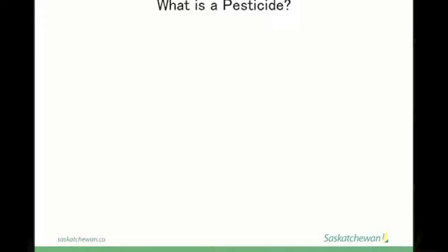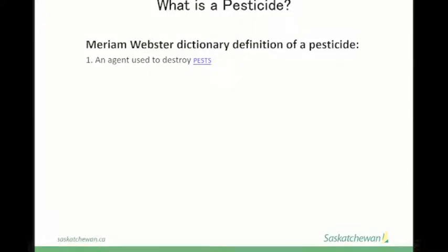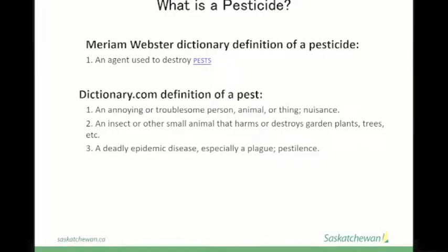First, we're going to start off with: what is a pesticide? I know you're probably wondering why I included this slide — it seems like common knowledge to someone who makes a living applying pesticides. However, I frequently have applicators say things like, 'it's not a pesticide, it's only Roundup,' or 'it's not a pesticide, it's an insecticide.' The Merriam-Webster Dictionary definition of a pesticide is an agent used to destroy pests. The dictionary.com definition of a pest is an annoying or troublesome animal or thing, or an insect or other small animal that harms or destroys garden plants, trees, etc.